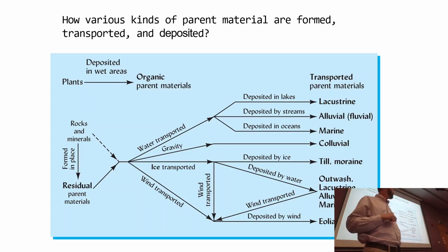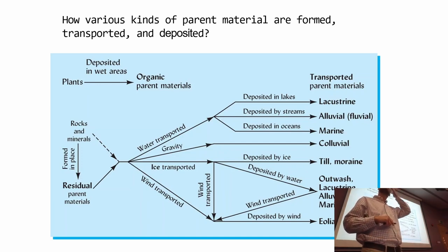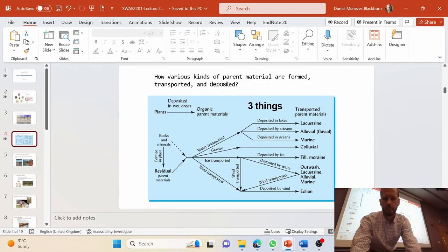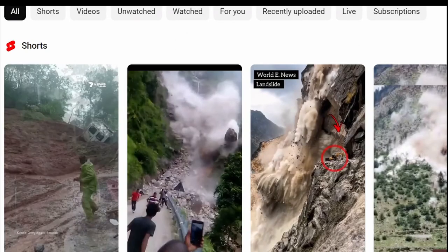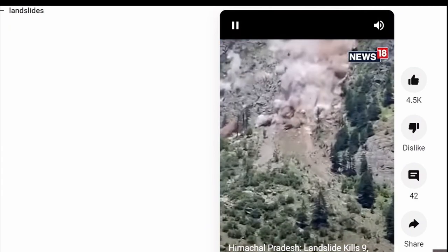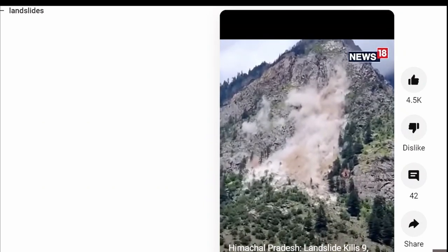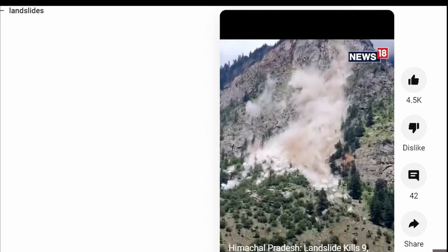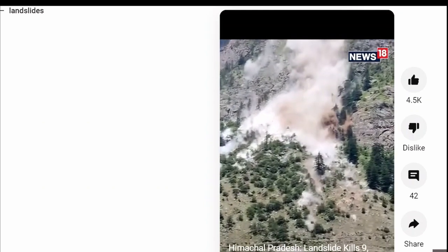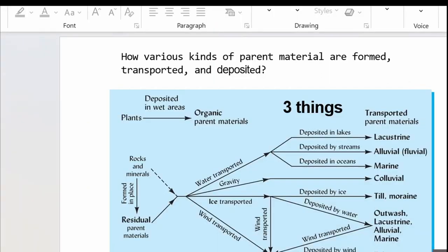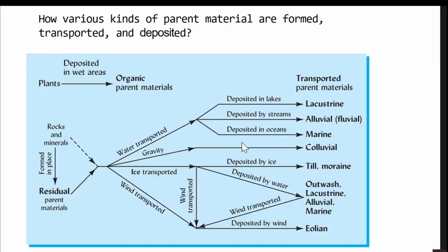If it's transported by gravity, it's colluvial. Gravity can deposit materials through landslides — similar to an avalanche of snow, but from rocks, mud, and soil material. So we have gravity making colluvial deposits.